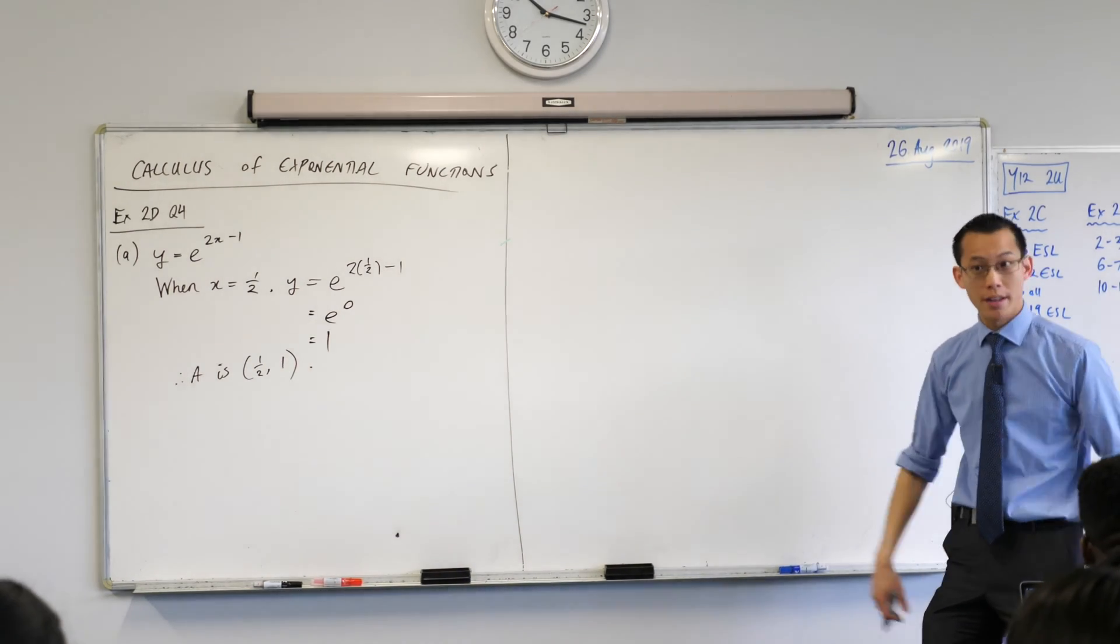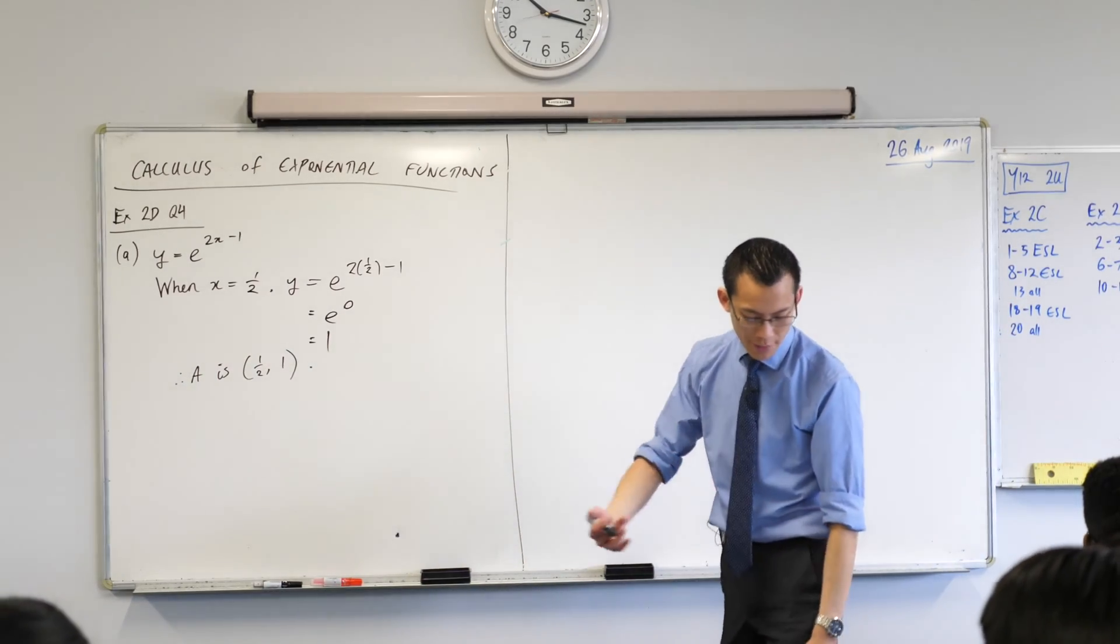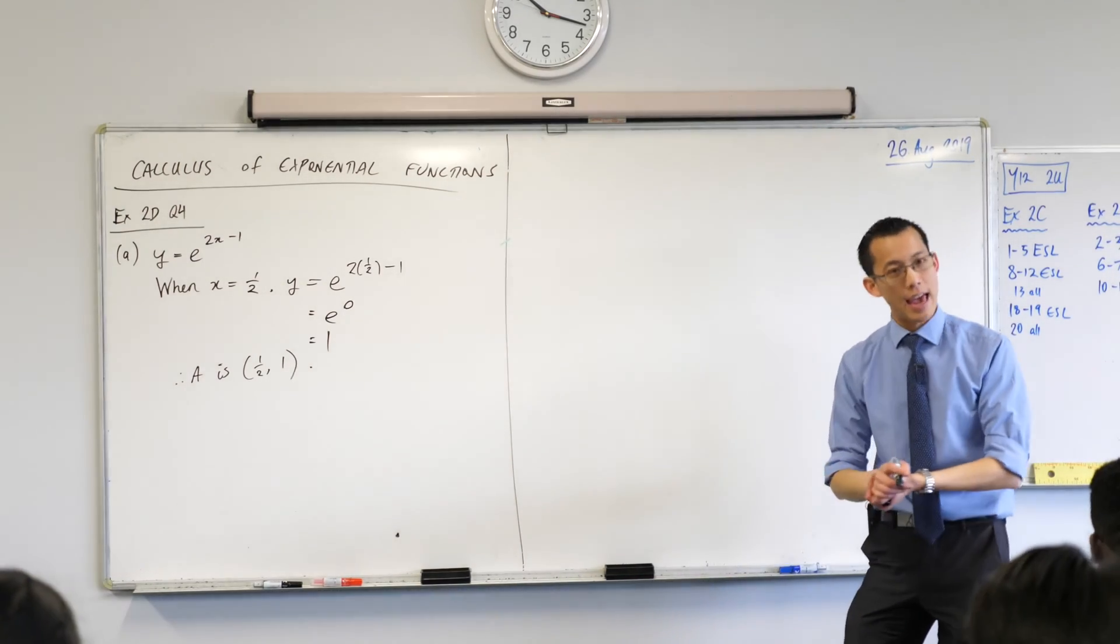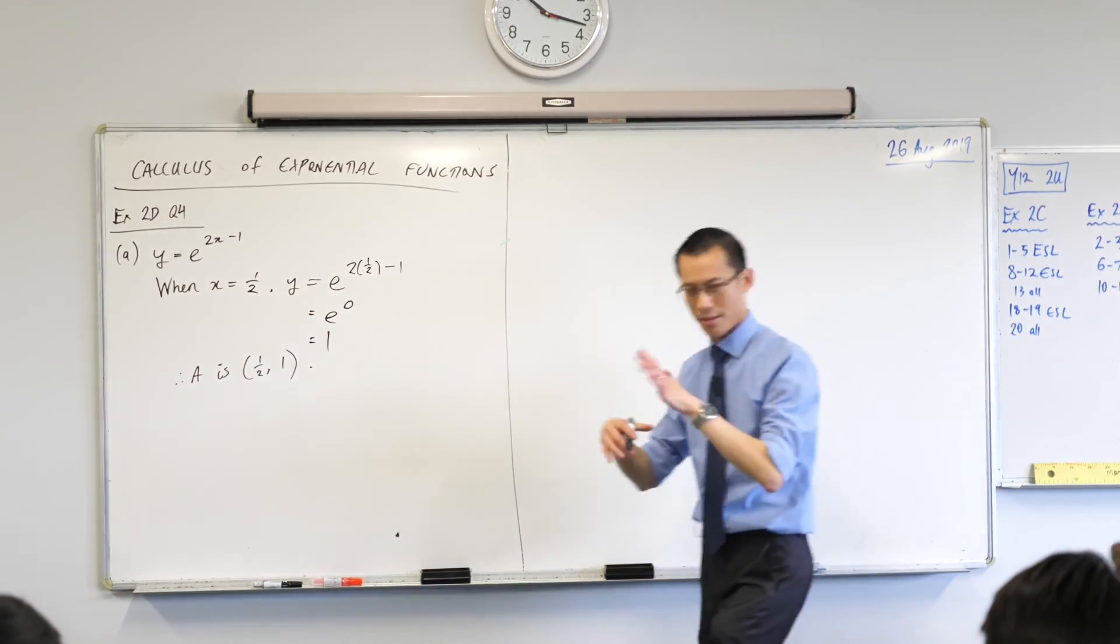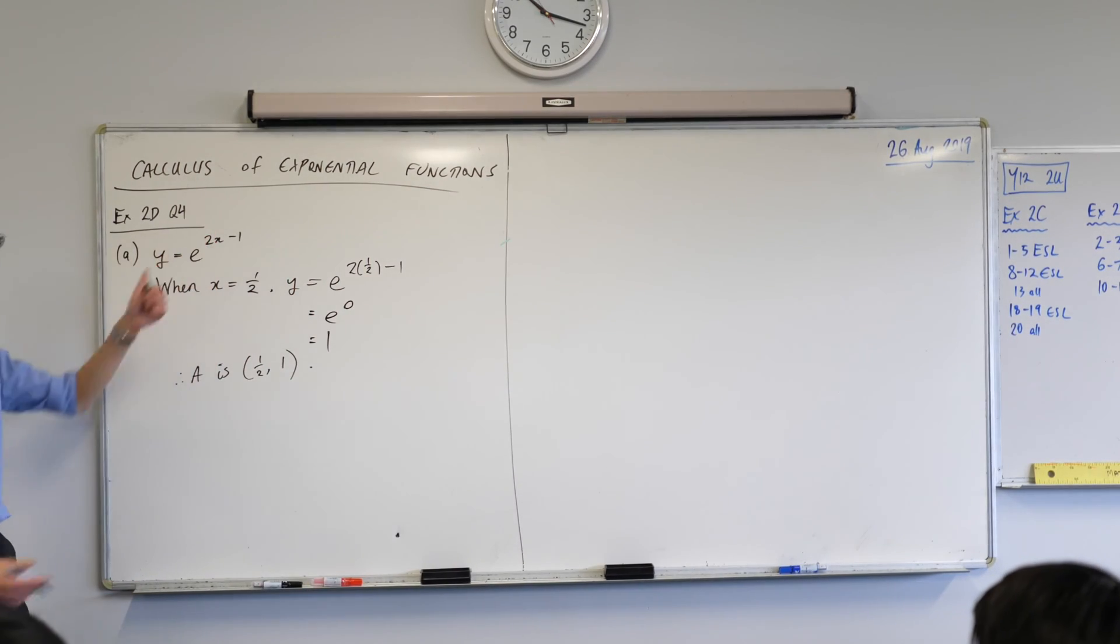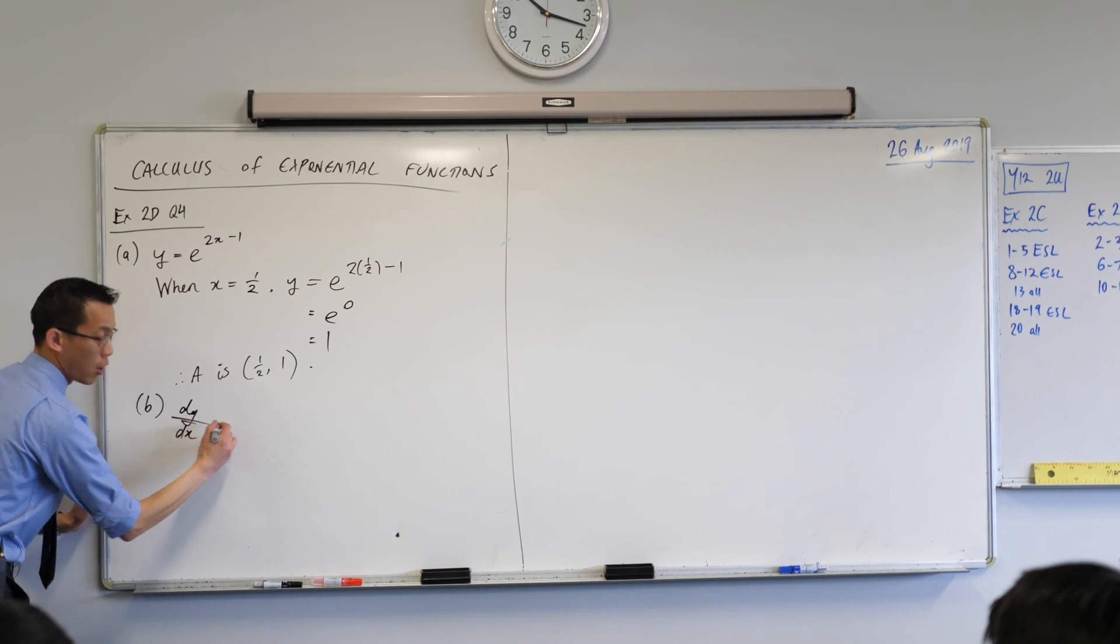Part B moves on, and this is where the calculus starts to kick in. It says find the derivative of that function, and then show that the gradient of the tangent at A is this. So that's a lot to take in. Let's just do one step at a time. They want us to find the derivative. So part B, we've got y written up there, so I'm going to write dy/dx.